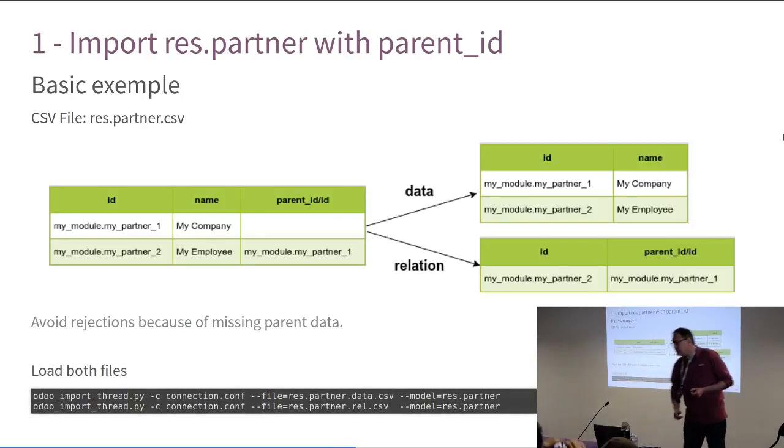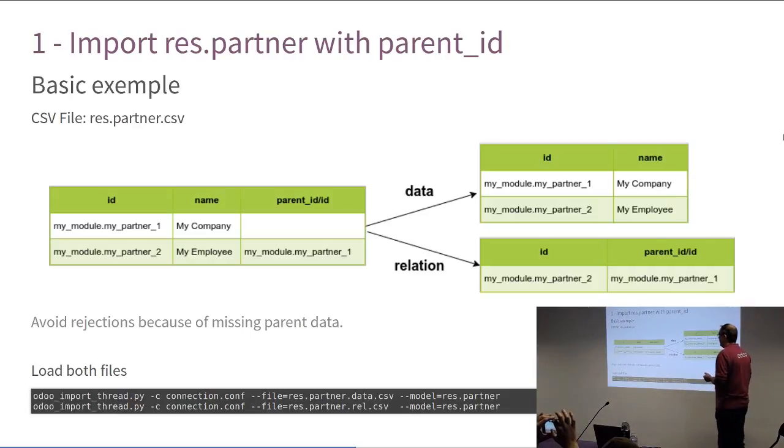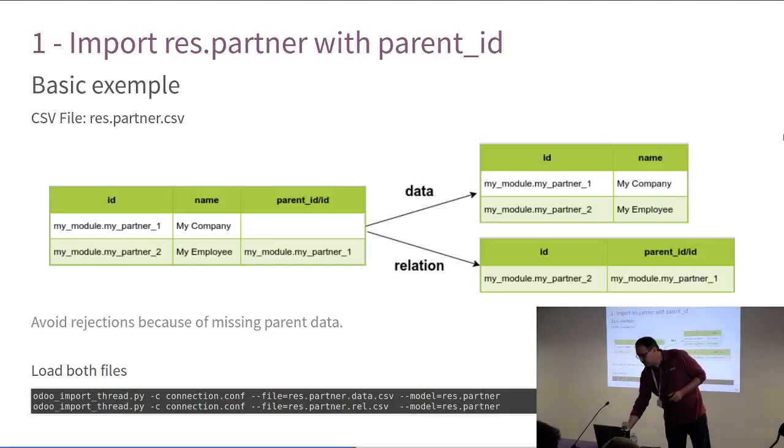So how to load this? Very simple. You call the script odoo_import_thread.py with the connection file. You specify the first file you want to import. And then the model that is res.partner. And then you load the second file. And it's done. Very simple.